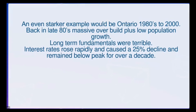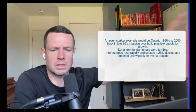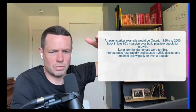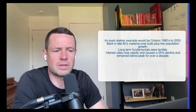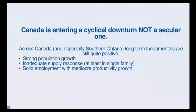Canada right now is entering a cyclical downturn, not a secular one — this is really important to keep in mind. Across Canada and especially Southern Ontario, the long-term fundamentals are still quite positive. We've got strong population growth. The Canadian government is bringing in record numbers of immigration — 430,000 a year. That's the same amount the U.S. is bringing in, and they have 10 times the population, just to keep that in perspective. We have an extremely high amount of population growth coming in.